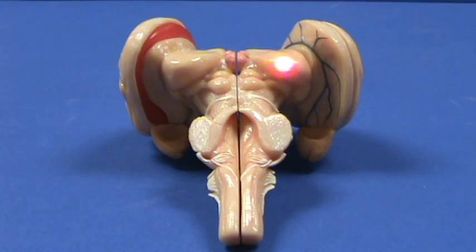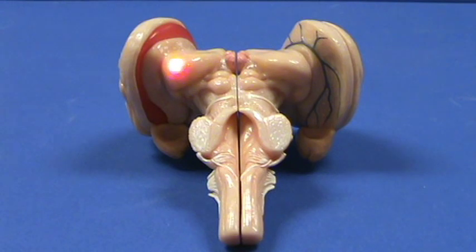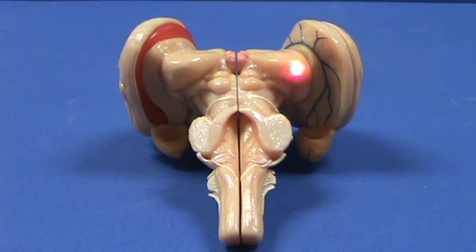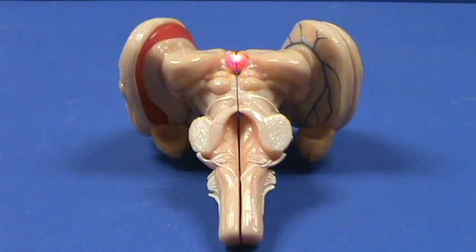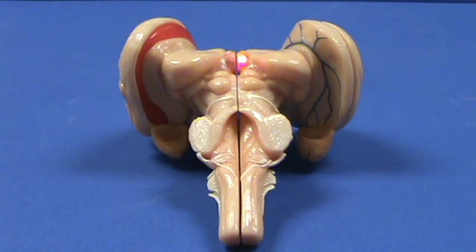This is part of the thalamus, and here's the other thalamus. This is the lateral geniculate body. And right over here in the middle, this unpaired structure is the pineal gland.